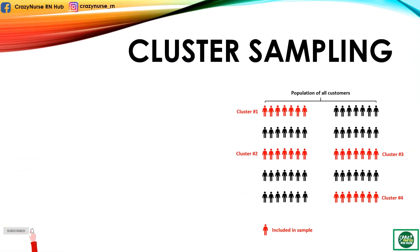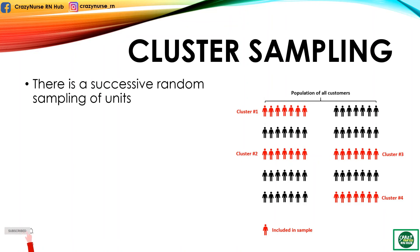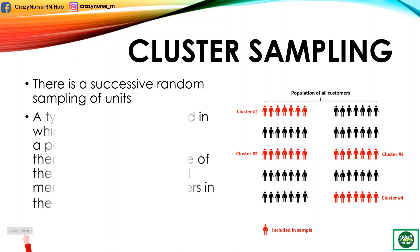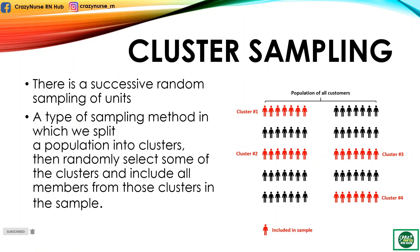Another one is cluster sampling. In this sampling design, there is a successive random sampling of units. The first unit to be sampled from a big population is large groupings or clusters such as provinces, cities, districts, barangays, and families. The final selection from a cluster may be performed by simple or stratified random sampling. In cluster sampling, we split a population into clusters, randomly select some of the clusters, and include all members from those clusters in the sample.